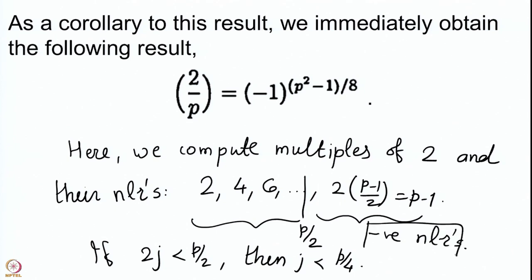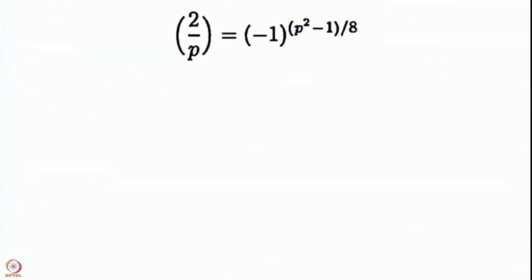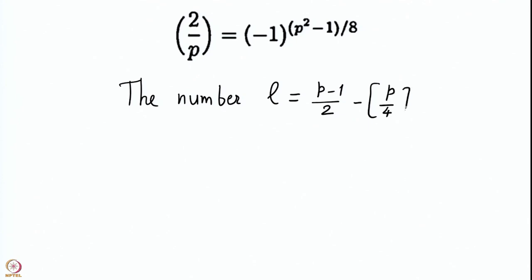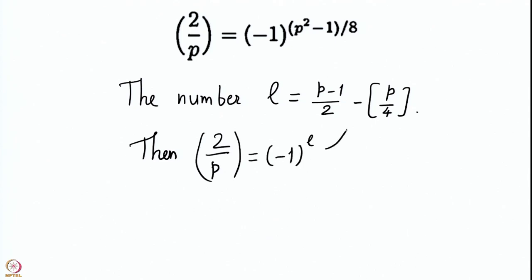All the remaining multiples give negative numerically least residues. So we remove the integral part of p/4 from the total count. The number L equals (p-1)/2 minus the integral part of p/4, and then the Legendre symbol (2/p) is (-1)^L.